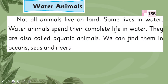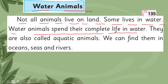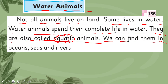Let's start the reading. Water animals — not all animals live on land; some live in water. Water animals spend their complete life in water. They are also called aquatic animals. Aqua means water. We can find them in oceans, seas, and rivers.